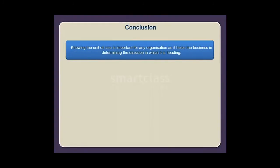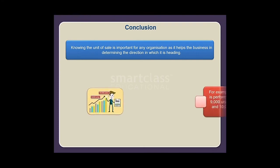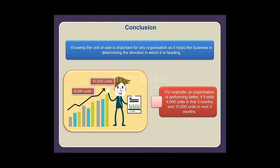To conclude, knowing the unit of sale is important for any organization as it helps the business determine the direction in which it is heading. For example, an organization is performing better if it sells 9,000 units in the first three months and 10,000 units in the next three months.